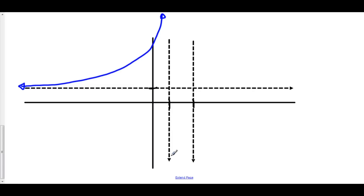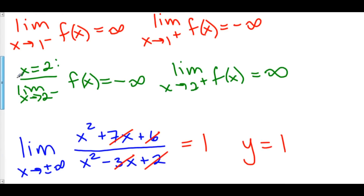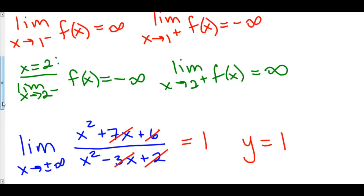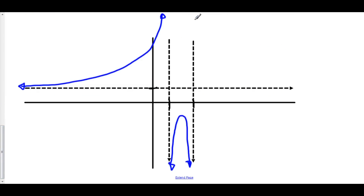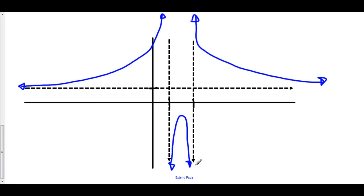We come down from negative infinity on the right of x equals 1, and approach negative infinity again to the left of 2. To the left of 2, we are going down to negative infinity, and to the right of 2, we're going off to positive infinity. We approach y equals 1 as we go off to infinity in that direction. This is a basic idea of what this particular function looks like. These vertical asymptotes were found by seeing where the denominator equals zero, and the horizontal asymptote was found by taking the limit as x goes to both positive and negative infinity.